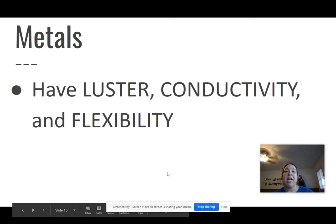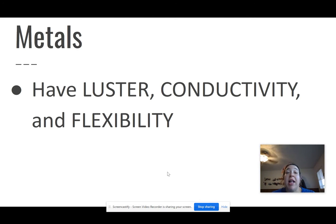All right, metals. We're going to do a little bit of work with metal. Metals have to have luster, conductivity, and flexibility in order for it to be classified as a metal. So basically you can determine what type of metal it is based on these three things. So luster, conductivity, and flexibility. It's going to come up again. Don't forget it.